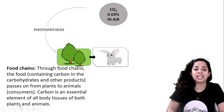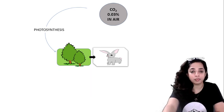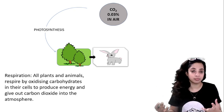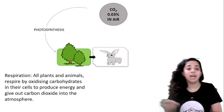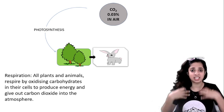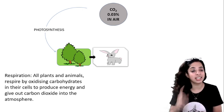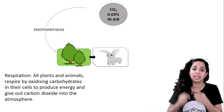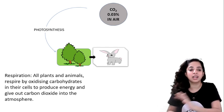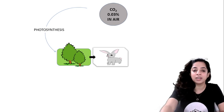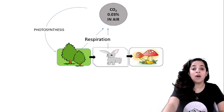Carbon is an essential element of all body tissues of both plants and animals. When these organisms respire — and remember, even plants respire — they oxidize the carbohydrates taken in through food in their cells to produce energy. In doing so, they release carbon dioxide back into the atmosphere. This cellular respiration converts carbohydrate back to CO2, returning it to the atmosphere.